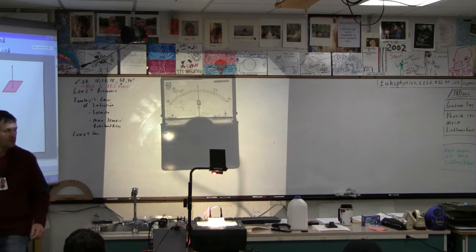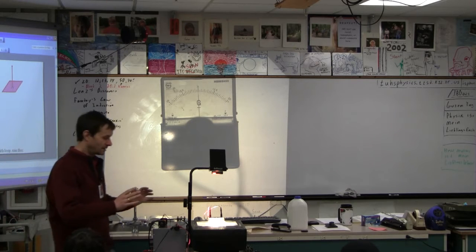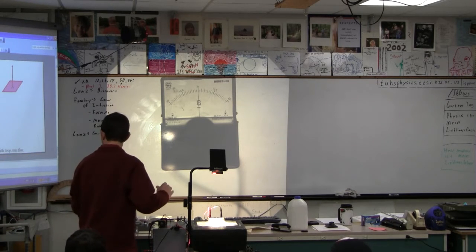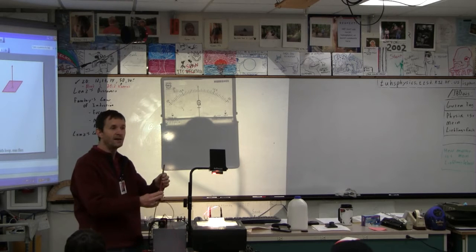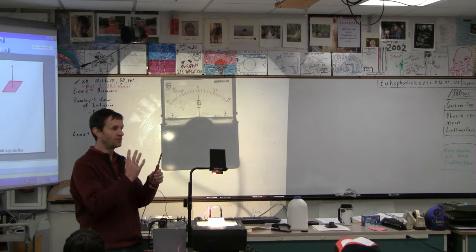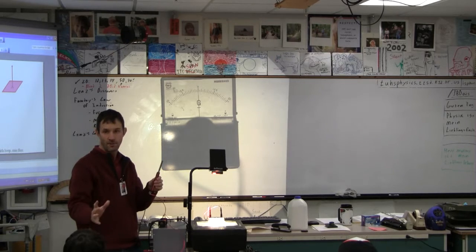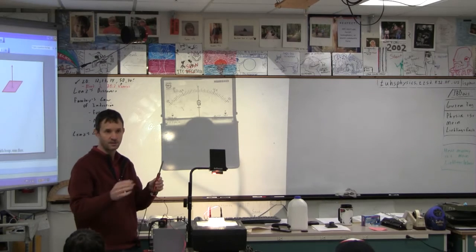Back in the day, they understood that if you had a magnet, if you had a coil of wire and you let current flow through the coil of wire, that that would become a magnet. Does this make sense?